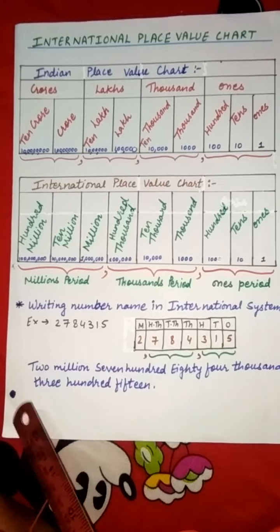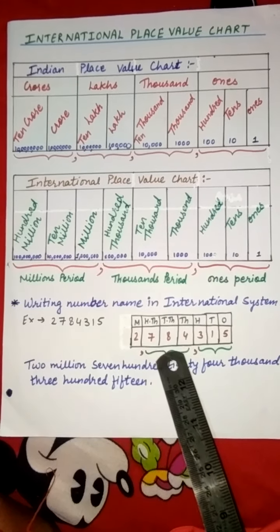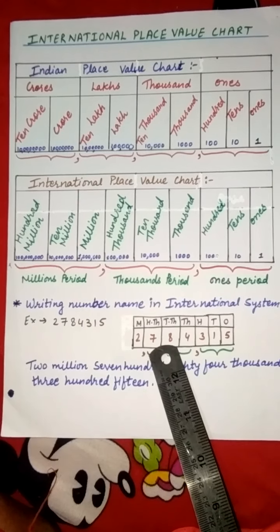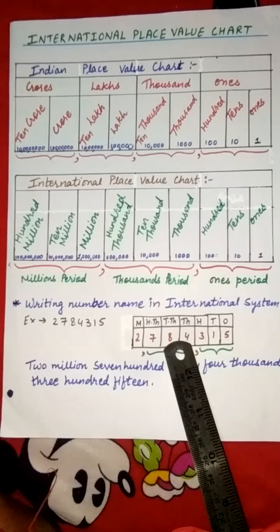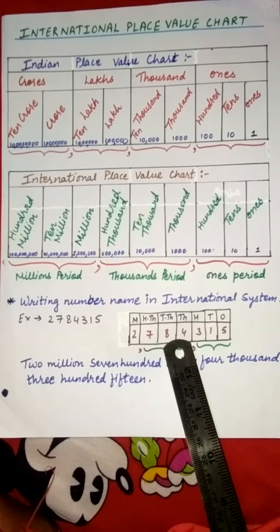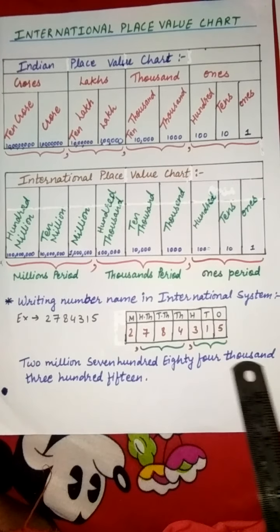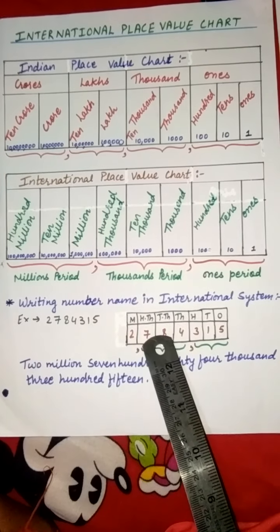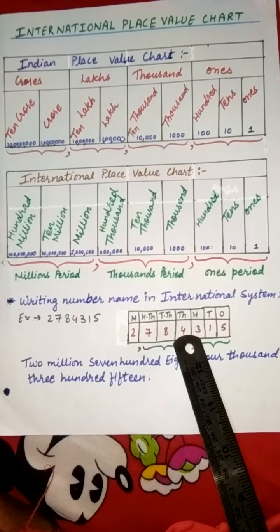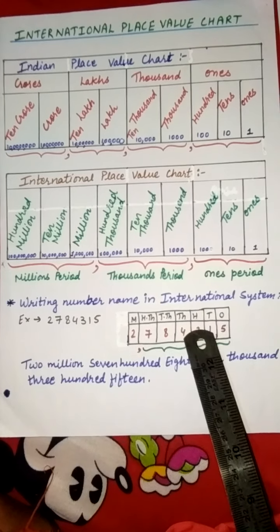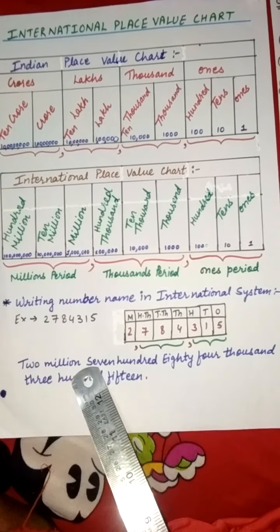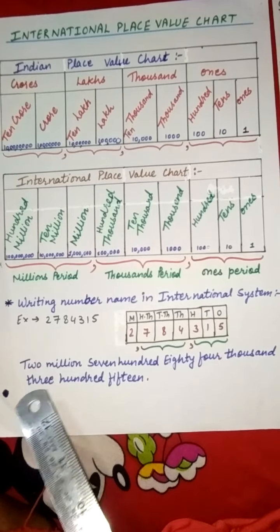2 is in the millions place, so we will write 2 million. This is 1 period, so you count it together. The next digits are in the 100,000 block, 10,000 block, and 1,000 block — you write them together as 784,000, that is 784 thousands. And 3 is in the hundreds place, so it is written as 300, and 1 and 5 are in the tens and ones place, so it is written as 315. So the full number is written as 2,784,315.